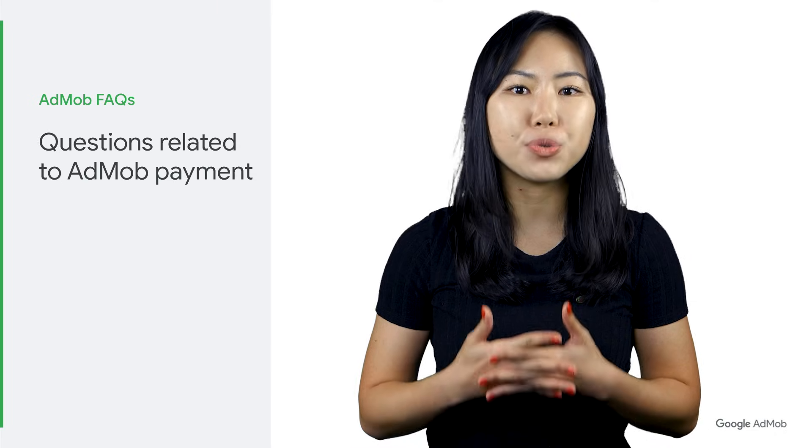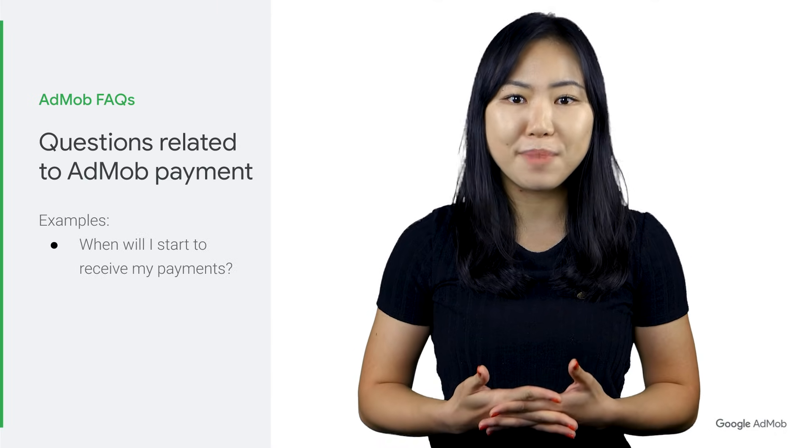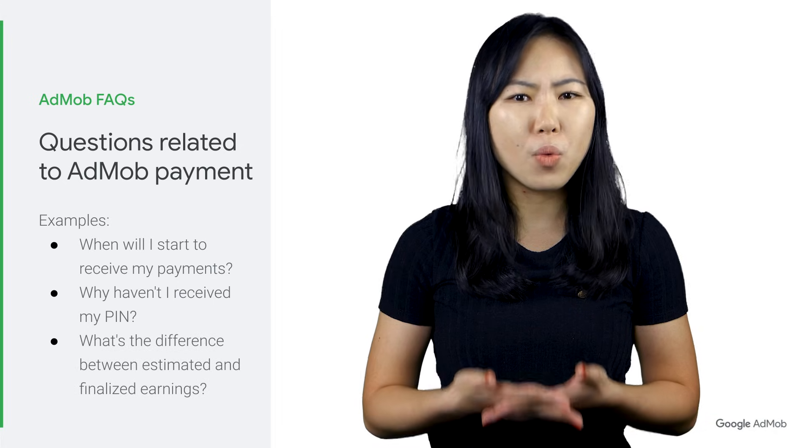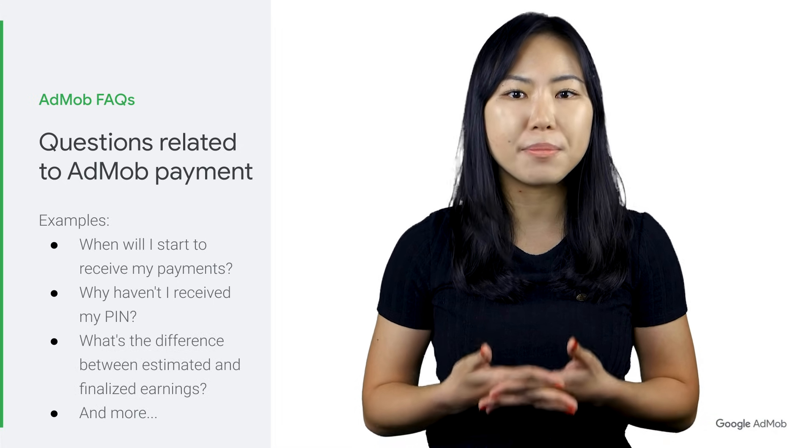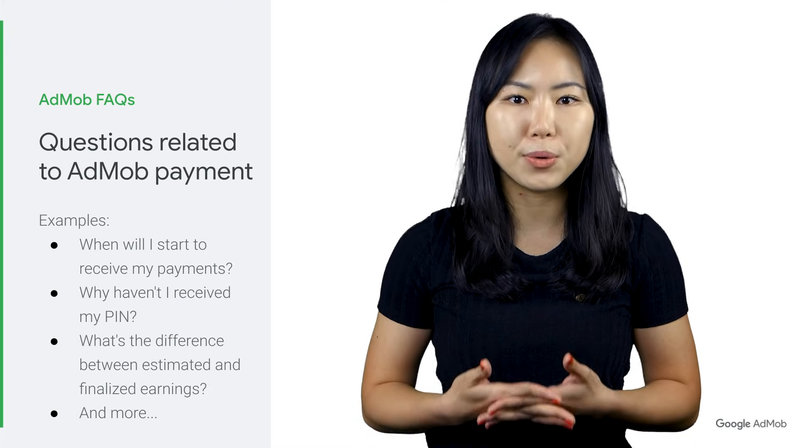Finally, if you have any questions related to AdMob payments — such as when will I start to receive my payments, why haven't I received my PIN, or what's the difference between estimated and finalised earnings — please make sure to check out our AdMob Payment FAQs resource in the video description below. We hope this video helps you better understand the important steps to get your account set for your first AdMob payment. To learn more, you can visit the AdMob Help Centre and the AdMob website via the links in the description. Make sure to subscribe to the Google AdMob YouTube channel for more best practices and tips on how to grow your AdMob account further. Thank you for listening, and let us know in the comment section if you have any suggestions for new videos.